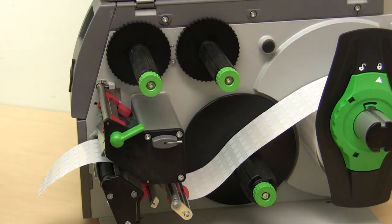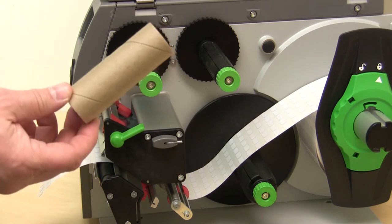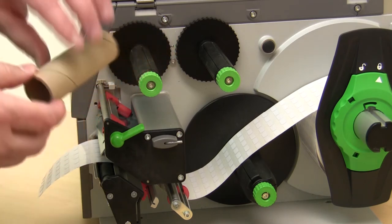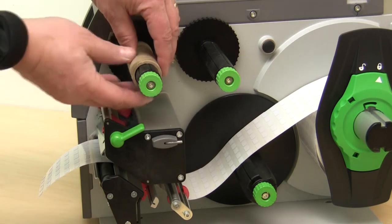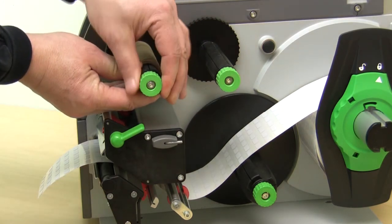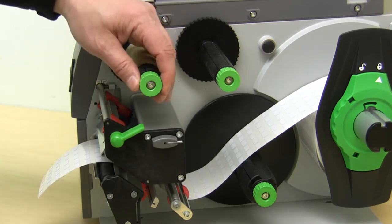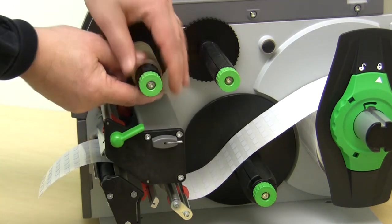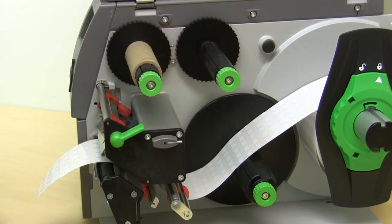Loading ribbons is also a very easy process. We start on the ribbon take up spindle by putting on an empty core. There is an empty core that comes with the printer when you first buy it and then you simply transfer empty cores as you use ribbons. By turning the green knob there, we tighten the core onto the spindle.